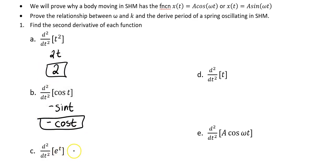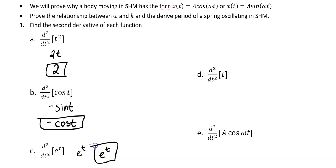The first derivative of e^t with respect to t is just going to be e^t. I take the derivative once more — I'm just left with e^t. Next one: take the derivative of t — that's just 1. Take the derivative again — that's just 0.